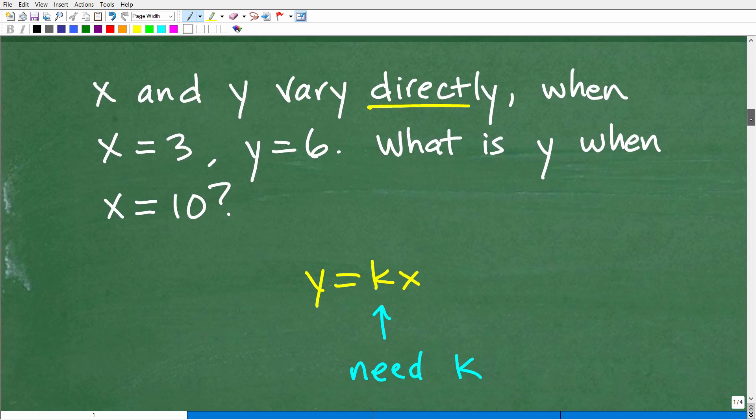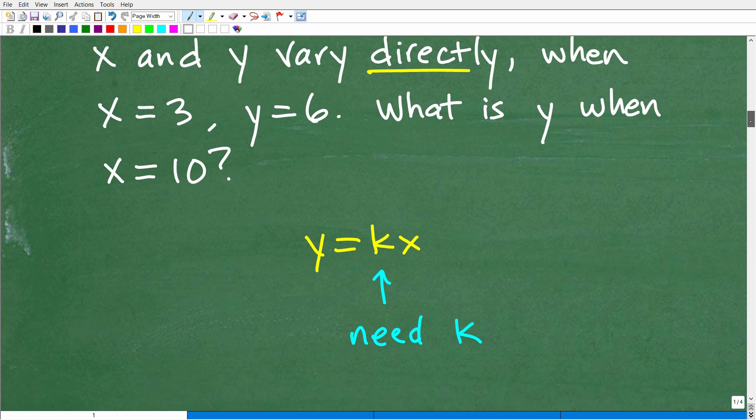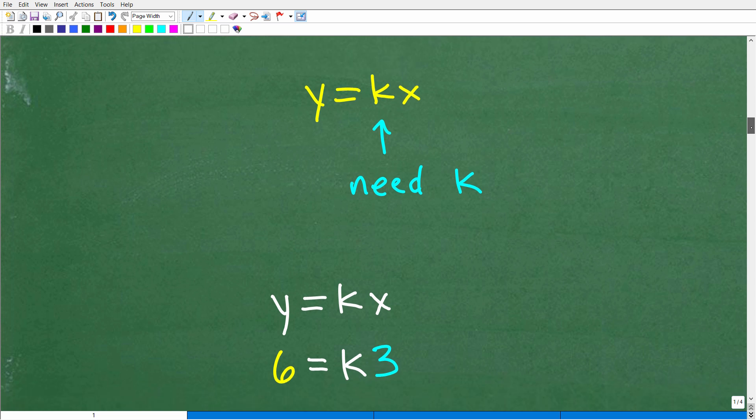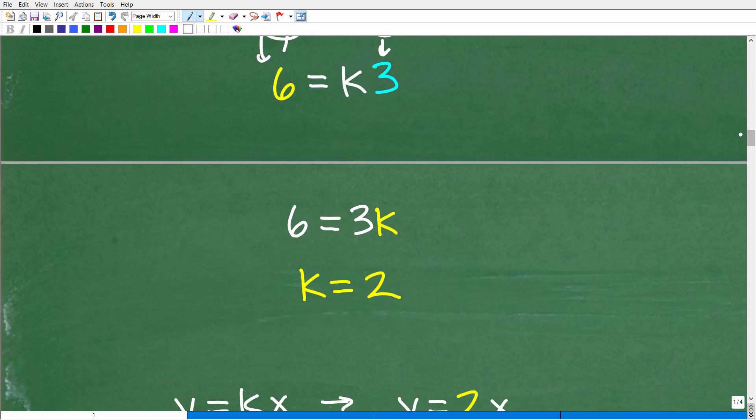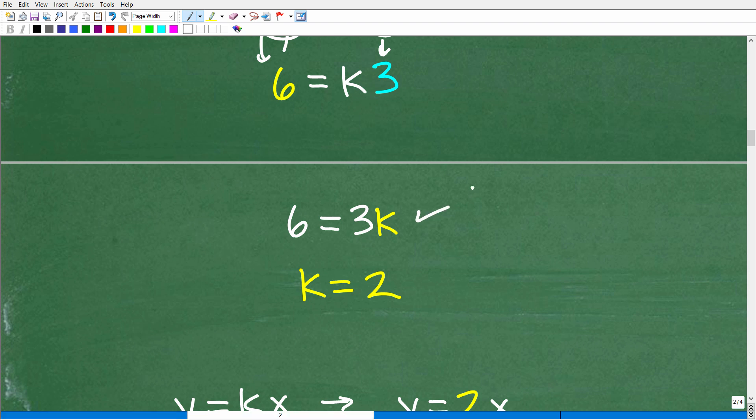Okay, so when x and y vary directly, x is equal to 3, y is equal to 6. What is y when x is equal to 10? First order of business is to find k. All right, we need k. So when x is equal to 3, we're going to plug in a 3 for x. Y is 6. So we have 6 is equal to k times 3. Basically, that's this formula right here. 6 is equal to 3k. This is multiplication. So it's k times 3 or 3 times k. But we'll see it this way. And then we need to just solve for k. Divide both sides of the equation by 3. And we get k is equal to 2.